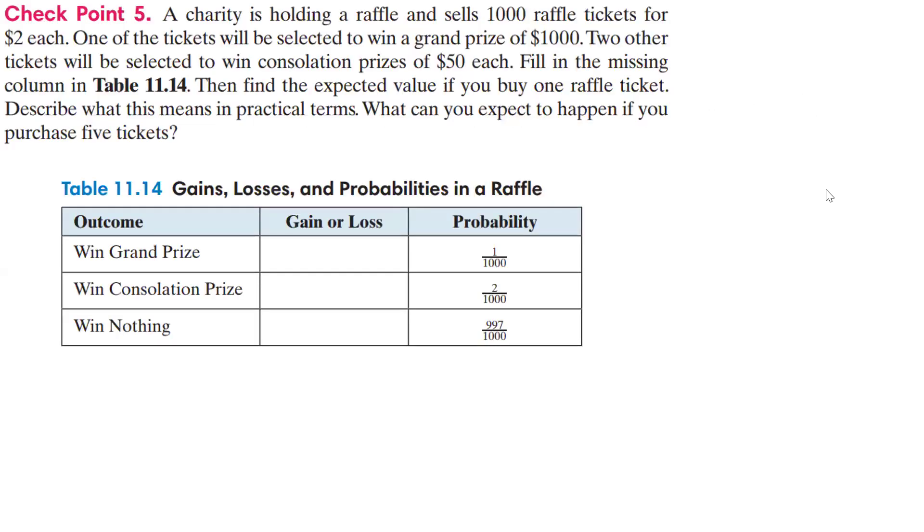So let's do this one. A charity is holding a raffle and sells 1,000 raffle tickets for $2 each. One of the tickets will be selected to win a grand prize of $1,000. Two other tickets will be selected to win consolation prizes of $50 each, and we're supposed to fill in the missing column in this table, and then find the expected value if you buy one raffle ticket. Now, describe what that means in practical terms and what can you expect to happen if you purchase five tickets.